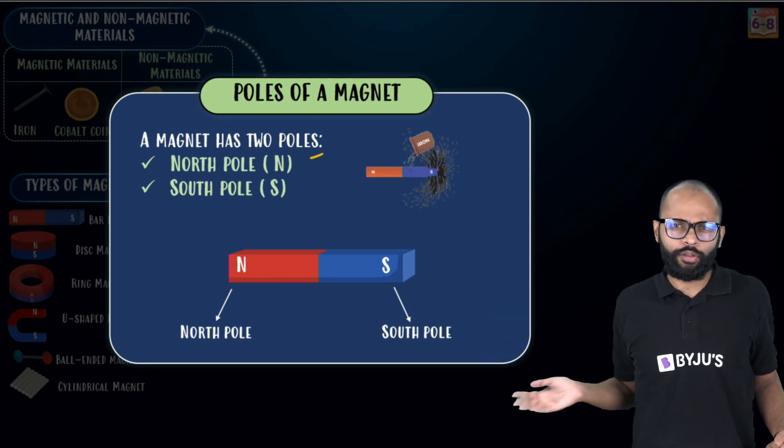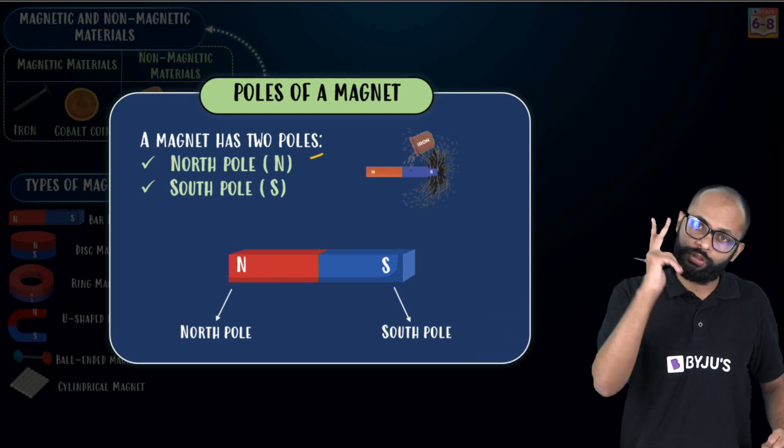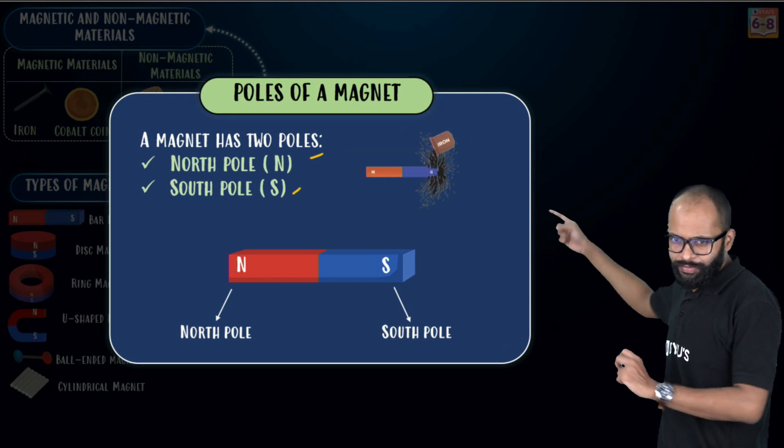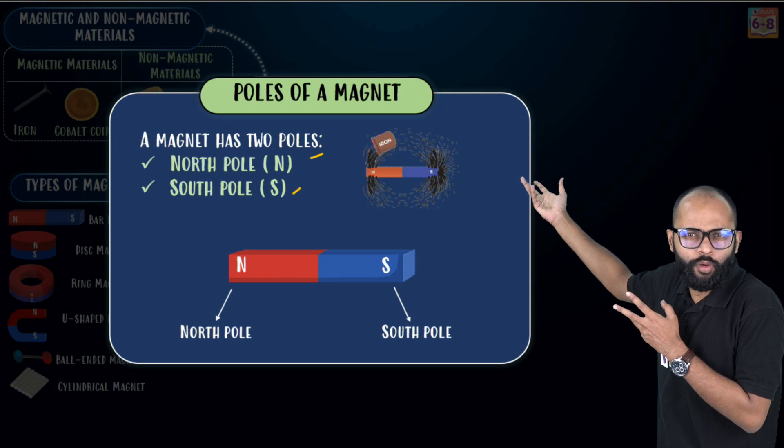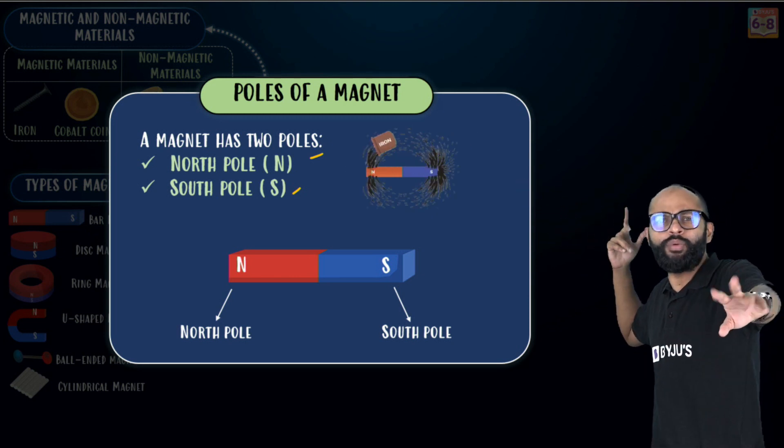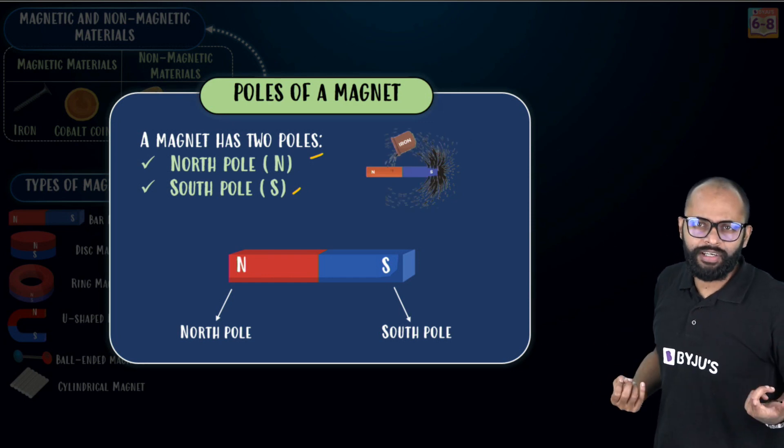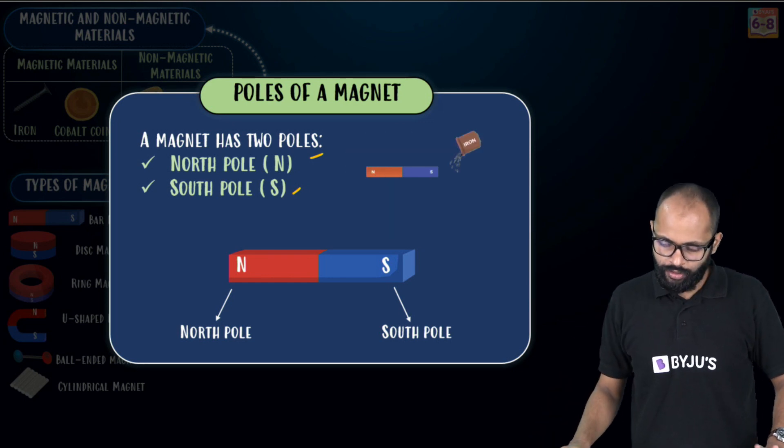And this iron filing animation is something we have already seen before. This is a very famous experiment to visualize the magnetic field lines. We have seen it. North pole, south pole, alright.